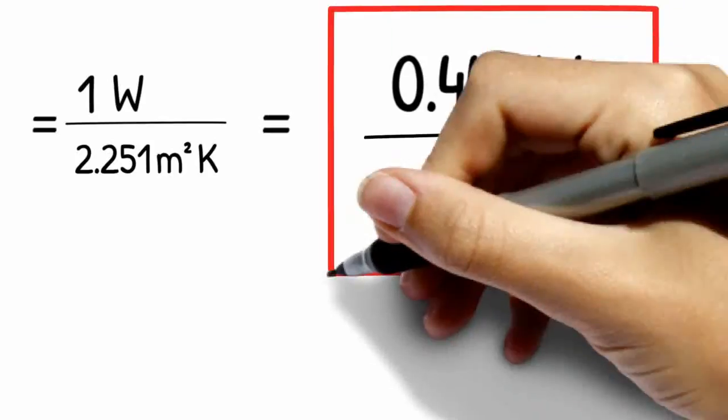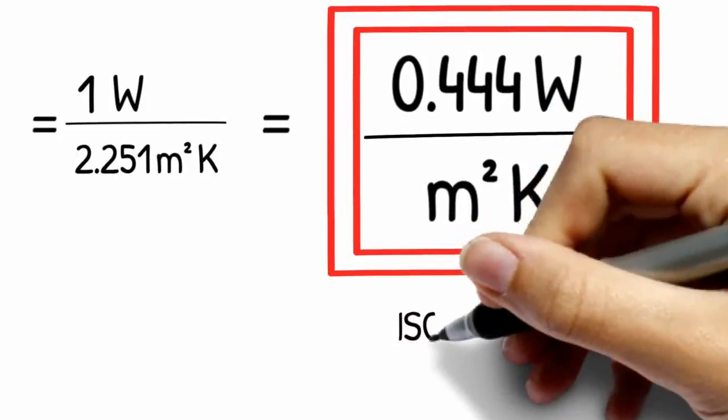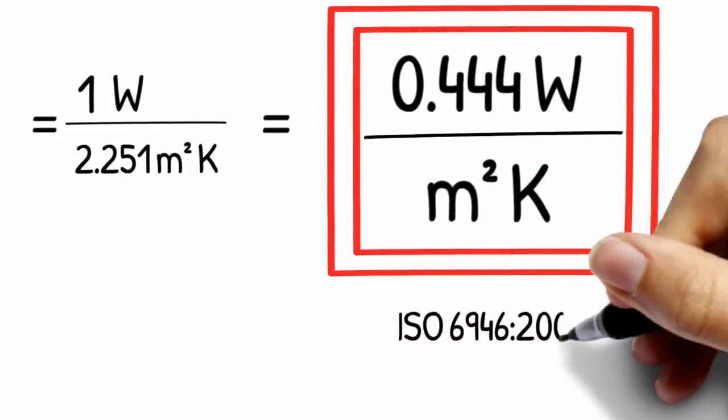And this is how to do U-value calculations for building elements with inhomogeneous layers in accordance with ISO 6946. There's a bit more to U-value calculations like how to go about tapered layers, how to account for air layers within a building construction, but the last few videos have given you a good start for further exploring U-value calculations in your own time.